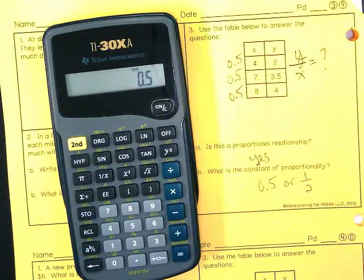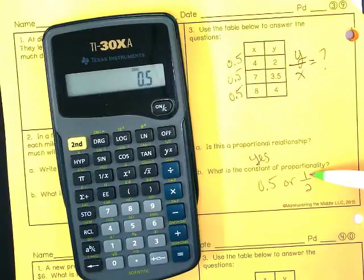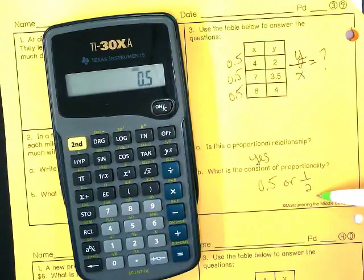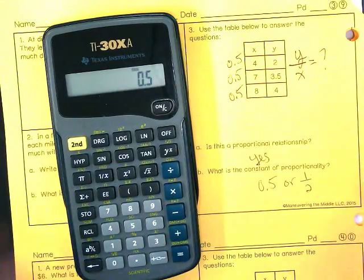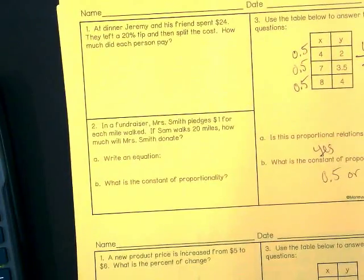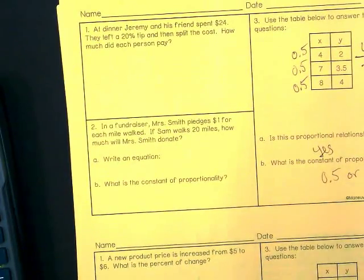That means if we're doing slope, it would be 1 up and 2 over. Up and over, up and over. Remember? Okay, when I asked you guys what you thought was the easiest, some people said 2 and some people said 3. When I look at 2 and I'm like, okay, I know they want me to set this up with a proportion, but it just says write an equation.